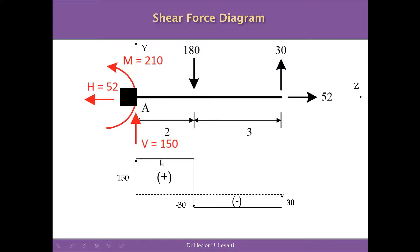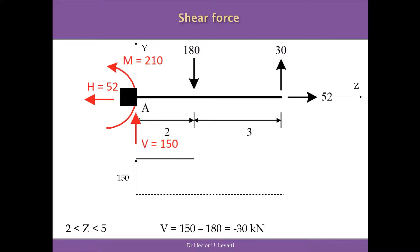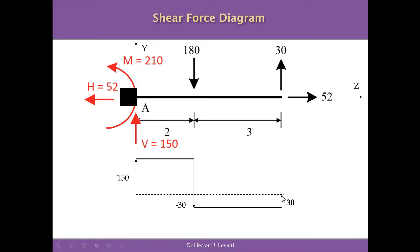The sign of shear forces is positive when the diagram is above the reference line and negative when below. Interval by interval: the first interval (zero to two) gives 150 kN; the second interval (two to three) gives 150 minus 180 equals minus 30 kN; and the diagram closes with 30 kN at the right end.